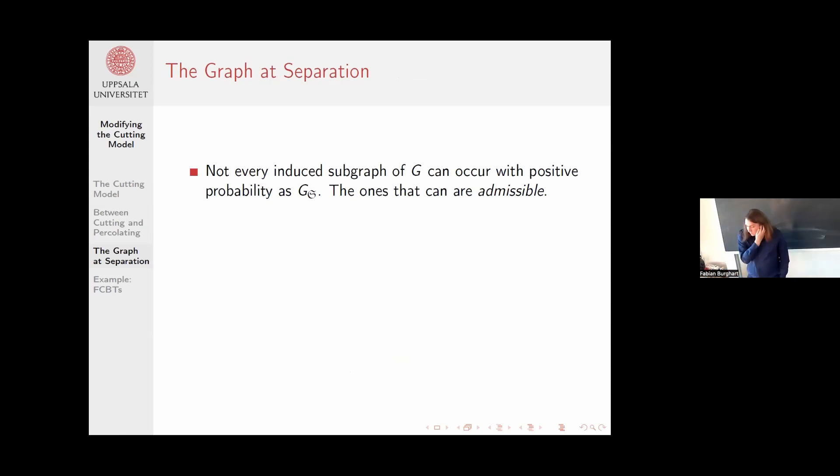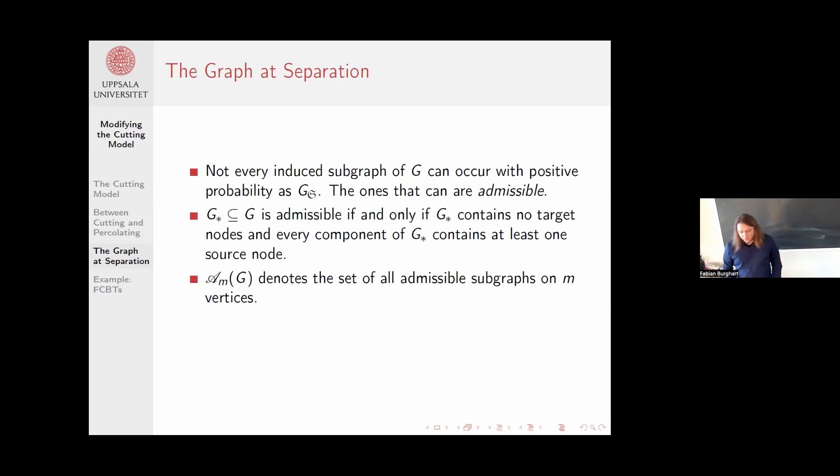Now let me try to answer the final question, which is how we can potentially approach this model. I'm going to look at the graph that's left behind at separation. The first observation is not every induced subgraph can actually occur with positive probability. I call the ones that can occur admissible. You can categorize those easily. An induced subgraph is admissible if and only if it contains no targets, that's clear, and also every component needs to contain at least one source node, because otherwise that bit would have been deleted.